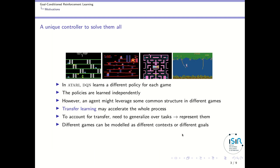Let's start with an example corresponding to Atari games. In Atari, the Deep Q-Network algorithm learns a different policy for each game — it faces 57 games and for each it learns a single policy, and it learns these policies separately. However, an agent might leverage the fact that there can be some common structure in different games. A single agent trying to learn from all games at the same time or sequentially may benefit from what it learned on one game when learning a different game. That's called transfer learning, and transfer learning may accelerate the whole process.